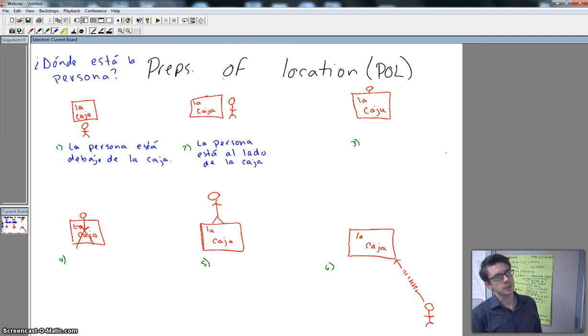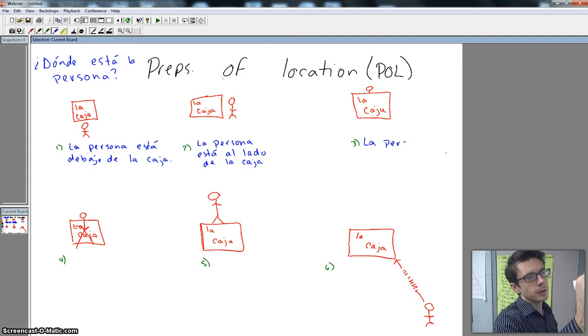Alright, número tres. You can only see a little bit. So you can only see from this up of him. So what do you think? What's going to be our location of the person there? Alright, la persona está... What do you think? Detrás de la caja. Alright, let's drop down to these below here.